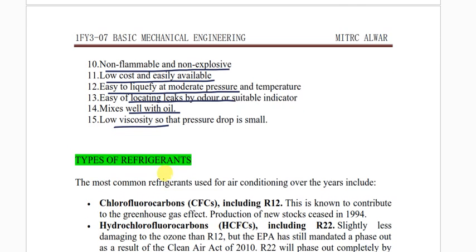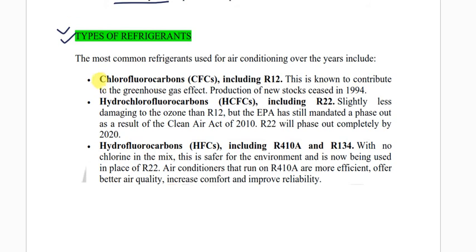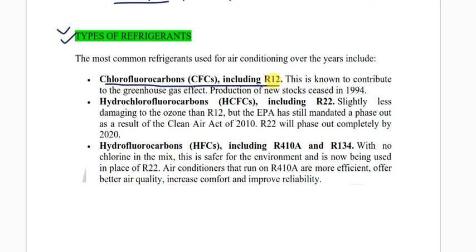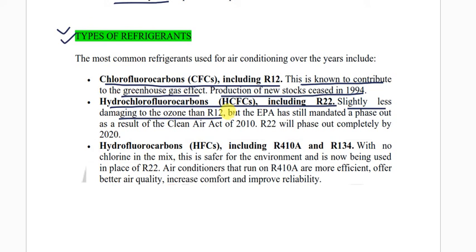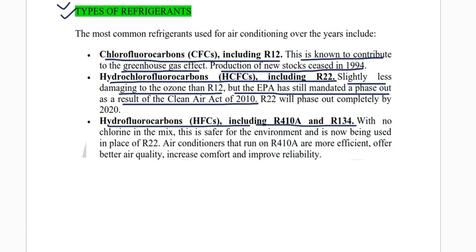These are the properties of refrigerants. Types of refrigerants include: Chlorofluorocarbon R12, which contributes to the greenhouse gas effect and whose production of new stocks ceased in 1994. Hydrochlorofluorocarbon (HCFC) including R22, which is slightly less damaging to the ozone than R12, but the EPA mandated a phase-out under the Clean Air Act of 2010. Hydrofluorocarbons (HFCs) including R410A and R134a are among the refrigerants currently utilized.